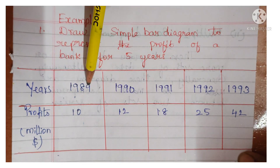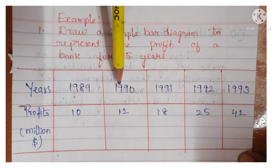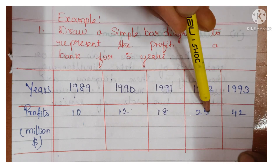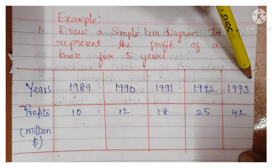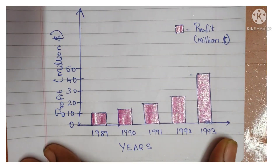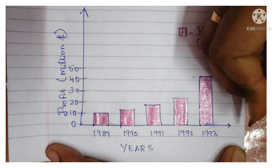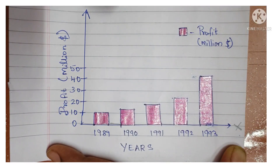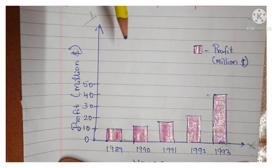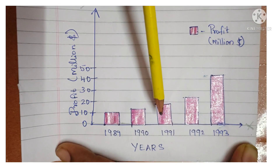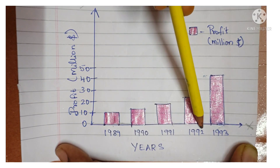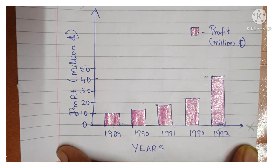The given data is: 1989 — profit is 10 million dollars; 1990 — 12 million dollars; 1991 — 18 million dollars; 1992 — 25 million dollars; 1993 — 42 million dollars. In the x-axis you write the various years 1989, 1990, 1991, 1992, and 1993.